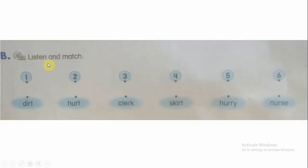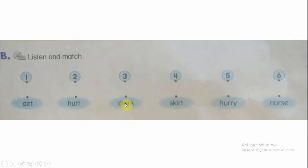Exercise B. Listen and match. You are going to listen to these words and write them in the correct order. Number one: Dirt. Number two: Hurt. Number three: Clerk. Number four: Skirt. Number five: Hurry. Number six: Nurse.